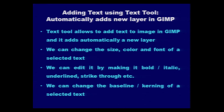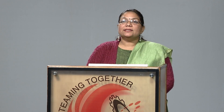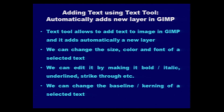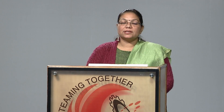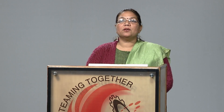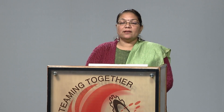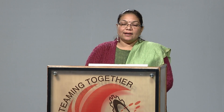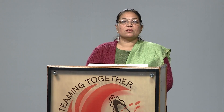First of all, let's discuss why the text tool is required. Just like other image editing software, GIMP also has a tool for editing text contents. You can add text by using the text tool available in the GIMP toolbox. This tool allows the user to add text to images in the GIMP working window, and it automatically adds a new layer in the layer dialog box. We can also change the size, color, and font of a selected text.